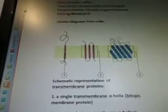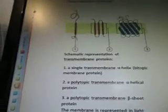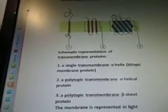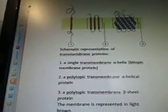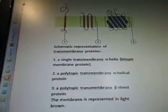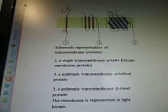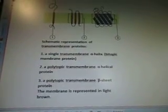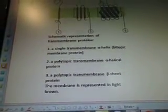This is a schematic representation of transmembrane proteins. Number one is a single transmembrane A helix bitopic membrane protein. B is a polytopic transmembrane A helical protein. And C is a polytopic transmembrane B sheet protein. The membrane is represented in light brown.